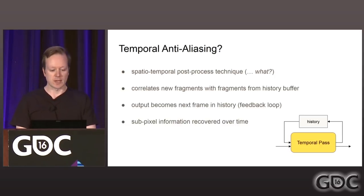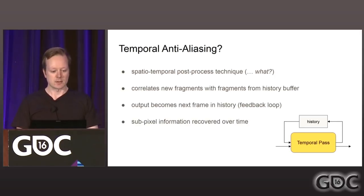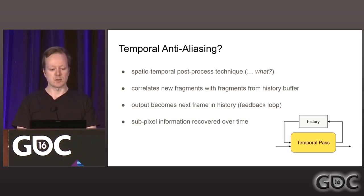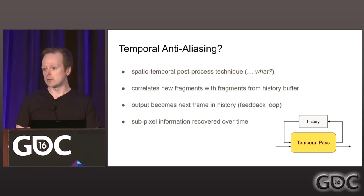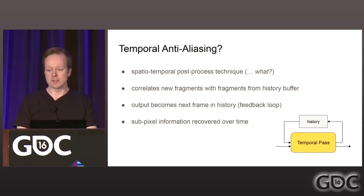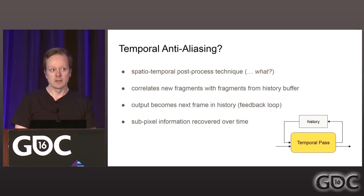So, what is temporal anti-aliasing? It's a spatial-temporal post-processing technique. It uses the spatial relationship between fragments in multiple frames to make a correlation and uses information from the past to refine the fragments we have just rendered in the current rasterization pass. It's inserted in the post-process chain after opaque, transparency, and pretty much everything except the last distortion effects. It's a feedback loop — it reads from a history buffer and writes to the same history buffer in a double-buffered fashion. With temporal anti-aliasing, subpixel information is recovered over time, which is really nice for stable images.